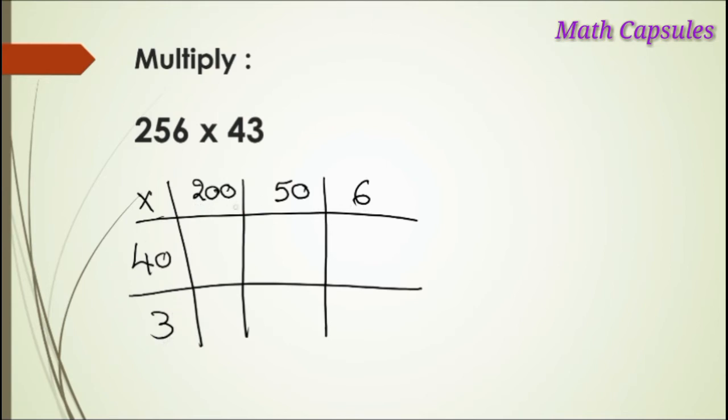So 200 times 40: we know that 2 times 4 is 8, and we have three zeros, so it will be 8000. 50 times 40: we know that 5 times 4 is 20, and we have two zeros, so it would be 2000. 6 times 40: we know that 6 times 4 is 24, and we have one zero.